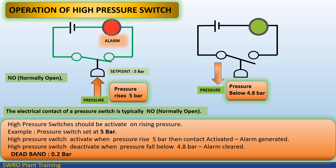Operation of a high pressure switch. High pressure switches should activate on rising pressure. Example: pressure switch set at 5 bar. The high pressure switch activates when pressure rises to 5 bar — contact is activated and alarm is generated. The high pressure switch deactivates when pressure falls below 4.8 bar and the alarm is cleared. Dead band: 0.2 bar. The electrical contact of a pressure switch is typically NO (normally open).